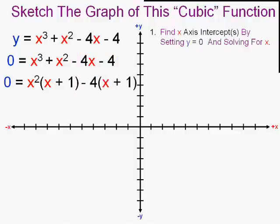I'm going to factor this taking out an x squared and we'll factor this portion taking out a minus four and sweetly I see that there's two x plus one. So let's take out an x plus one as you can see and I'll have x plus one times x squared minus four.